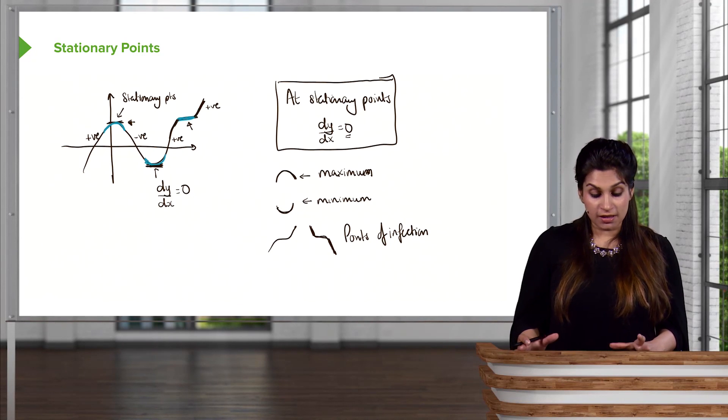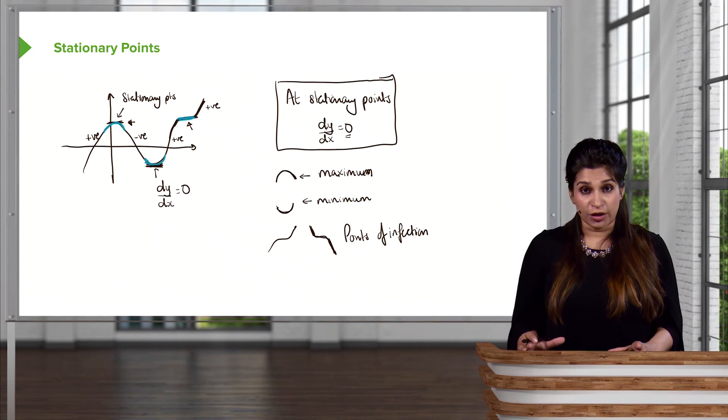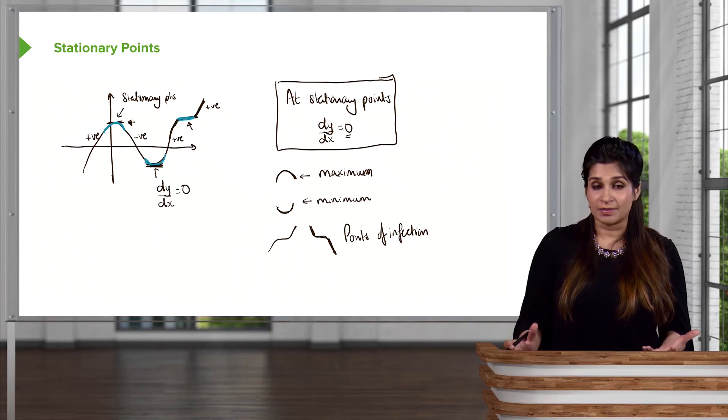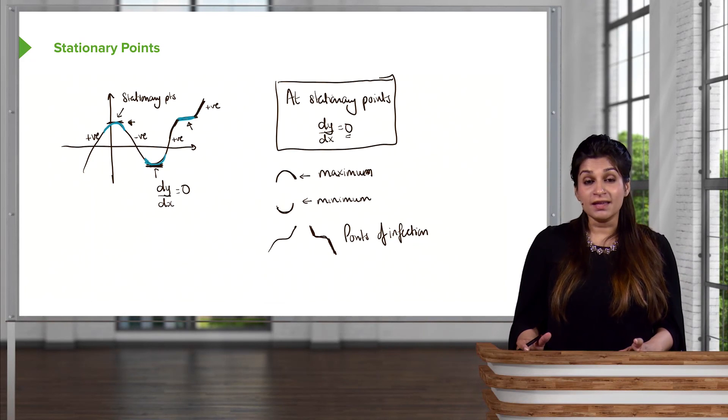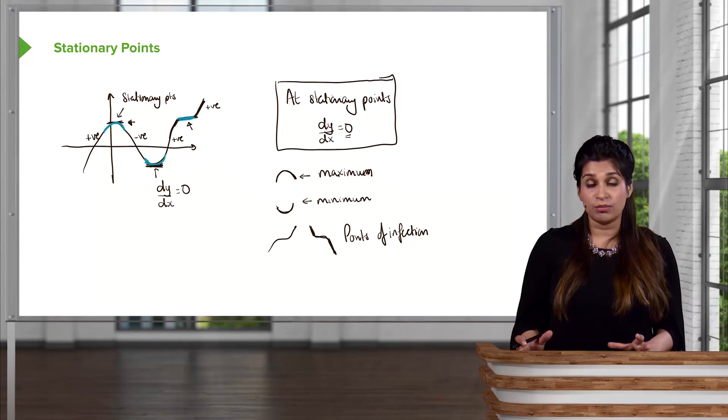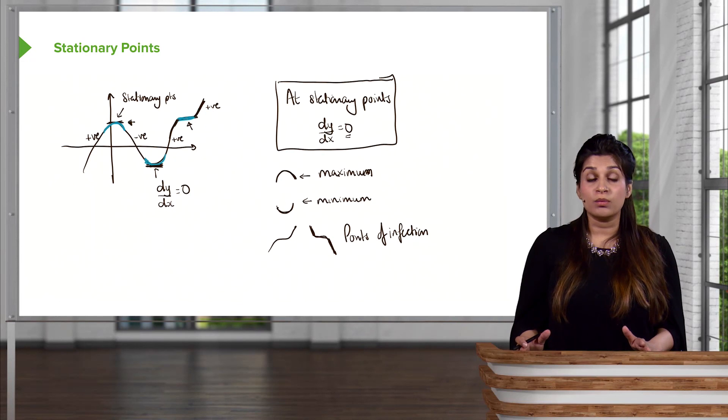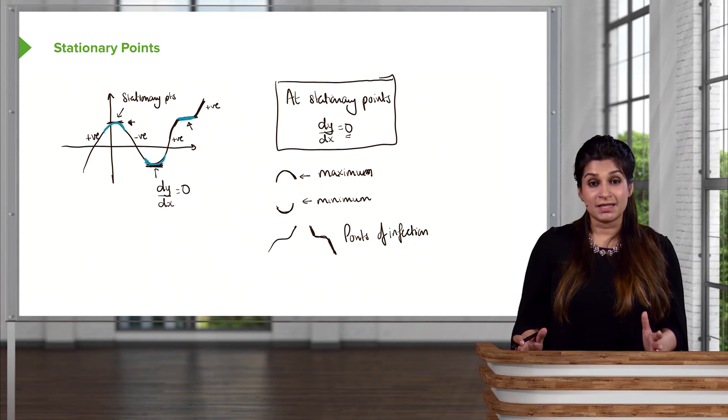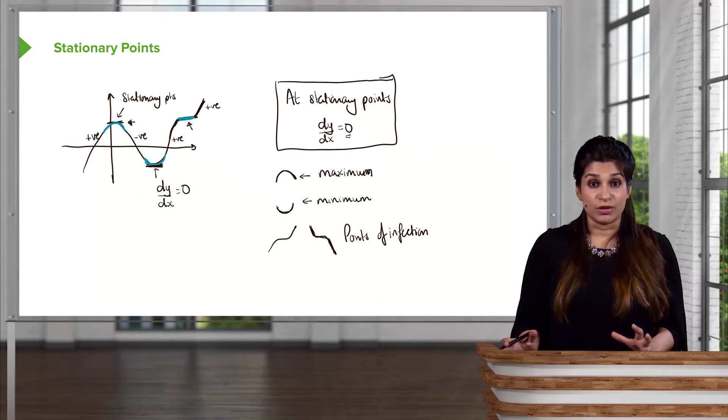So just to summarize this little page here, we are saying that stationary points occur when the gradient is zero. The gradient to us as mathematicians is dy/dx of a curve. We are saying that there are three types of stationary points, a maximum point, a minimum point, or a point of inflection. And we're going to move one step forward and actually discuss how to calculate maximum, minimum, and points of inflection.